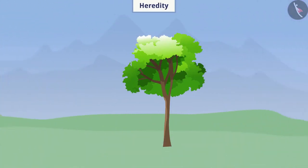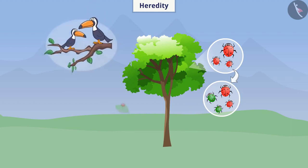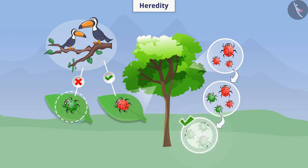Suppose there is a species of red insects on a tree. Due to accumulation of variations over generations, there is a rise of a new variety of green insects. Suppose a bird comes to live on that tree — it can easily find and eat red insects, but green insects can hide themselves in the green color of leaves. In this way, there will be a possibility of survival of the insect species. Variations help in the survival of the species.